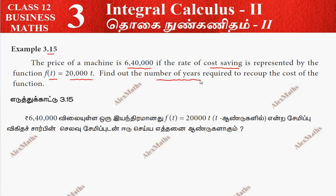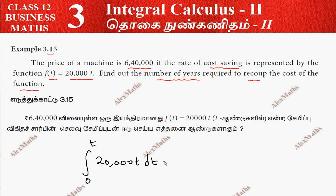Find out the number of years required to recoup the cost of the machine. If we look at the total saving, total saving is obtained by integrating the saving function from 0 to some t years, and total saving is set equal to 6,40,000.